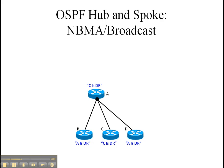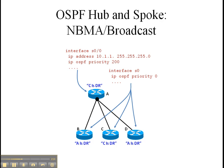Now how can you fix it? There are a couple of ways to accomplish this. The preferred method is to use the OSPF priority. Use OSPF priority and make sure the routers at the bottom don't become a DR. That will ensure that A will become the DR. I can guarantee that router A will be the DR all the time if you follow this configuration example.